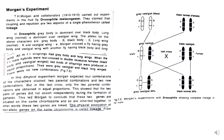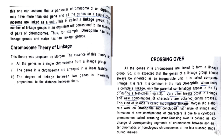This conclusion was derived by Morgan et al. From this one can assume that a particular chromosome of an organism may have more than one gene, and all the genes on a single chromosome are linked as a unit — this is called a linkage group. The number of linkage groups in an organism equals the number of pairs of chromosomes. In Drosophila there are eight chromosomes, so there are four linkage groups. Maize has 20 chromosomes, so it has 10 linkage groups.